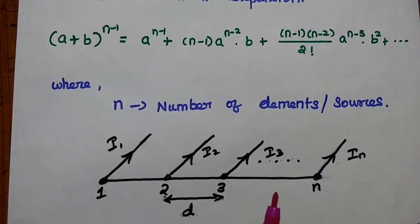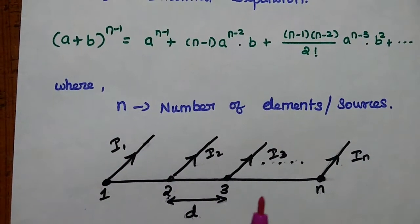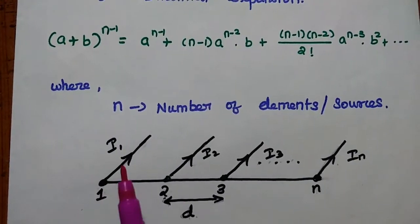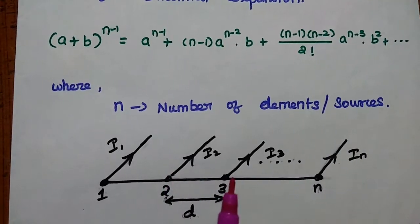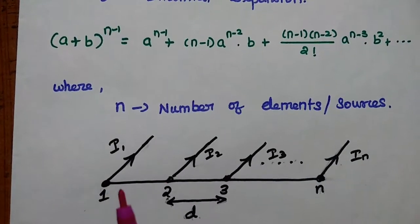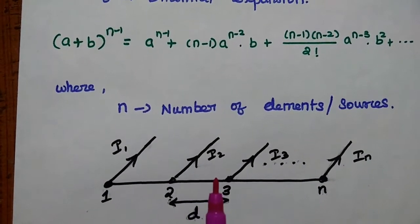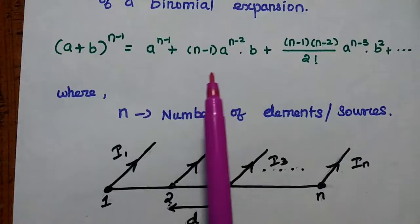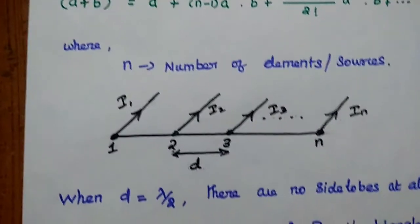This is the array structure. It is a group of elements. Here, each element is fed with a different amplitude. These amplitudes are proportional to the coefficients of binomial expansion.